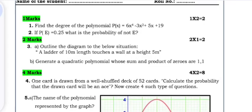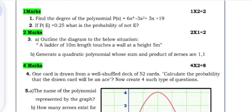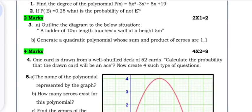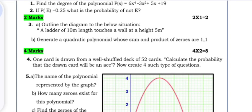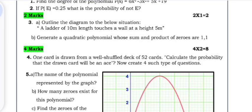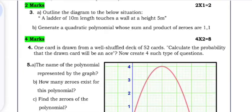Question 1: Find the degree of the polynomial P(x) equals the given polynomial. Question 2: If P(E) is 0.25, what is the probability of not E? Question 3a: Outline the diagram to the below situation - a ladder of 10 meter length touches a wall at a height 5 meters.